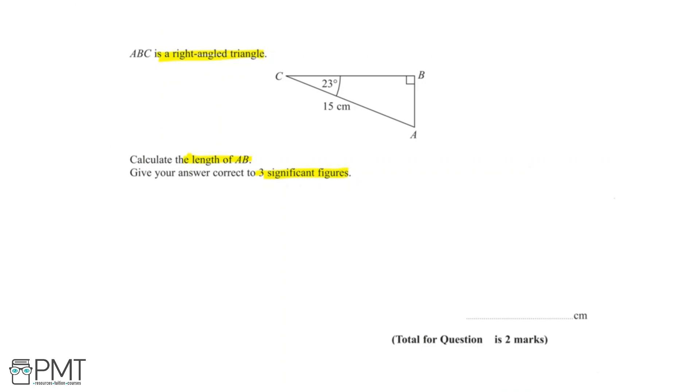We can start by identifying AB on our diagram. We can see that AB is right over here.